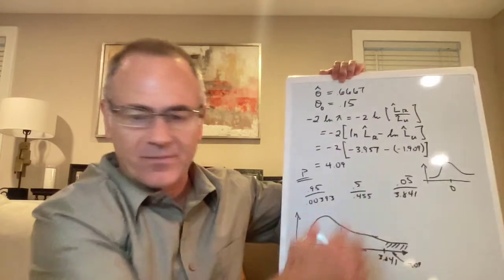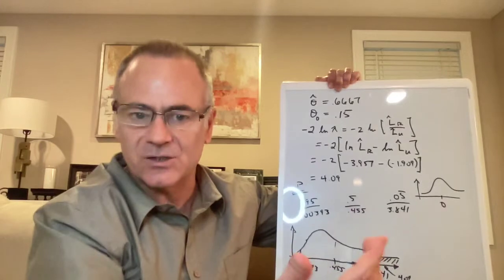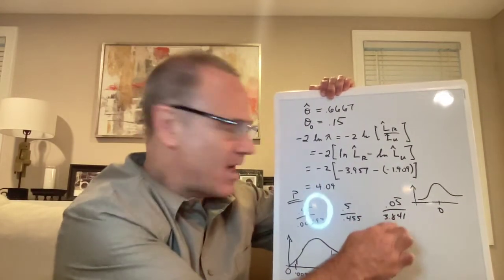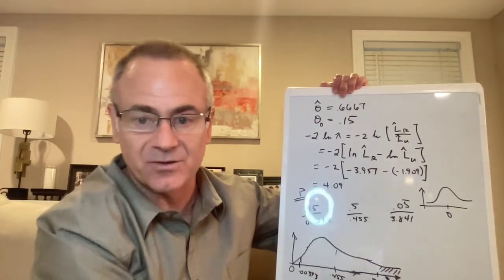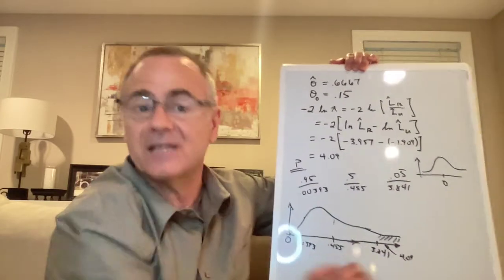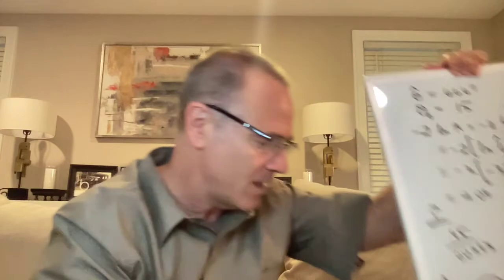We got a value of our test statistic 4.09, we compared that to the chi-square distribution. The magic number, or the cutoff value for the P equals 0.05 statistical test was 3.841. Our value is greater than that, so we reject it. We can reject our null hypothesis using the likelihood ratio test.